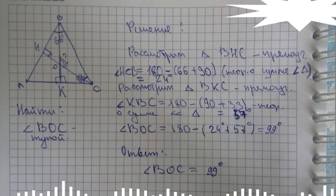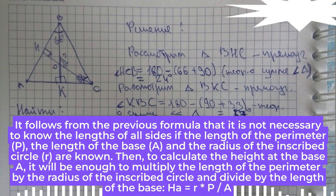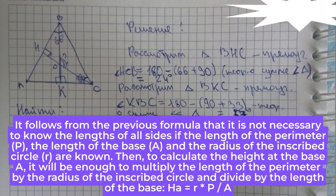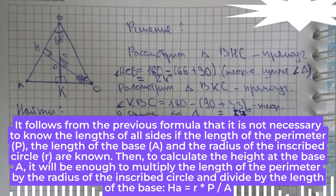Step 4. It follows from the previous formula that it is not necessary to know the lengths of all sides if the length of the perimeter, p, the length of the base, a, and the radius of the inscribed circle, r, are known. Then, to calculate the height at the base a, it will be enough to multiply the length of the perimeter by the radius of the inscribed circle and divide by the length of the base: ha = r * p / a.